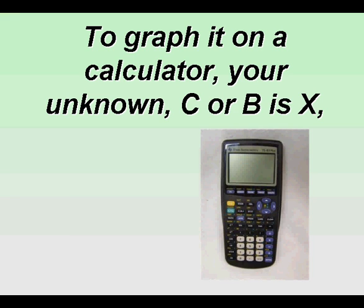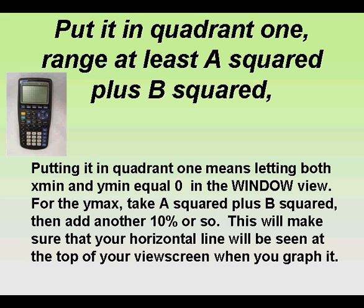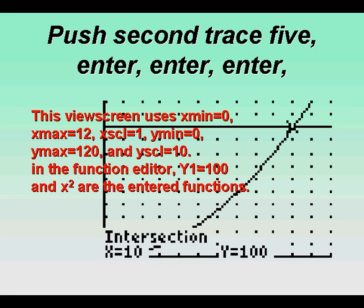To graph it on a calculator, your unknown C or B is X. Set the domain for at least the unknown. You will pass the test. Put it in quadrant one. Range at least A squared plus B squared. Put A squared plus B squared with Y one, and Y two put X squared. Push second trace five. Enter, enter, enter.